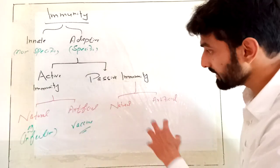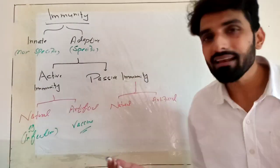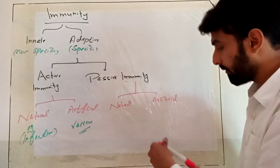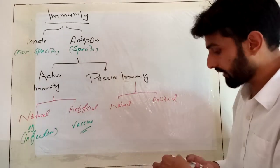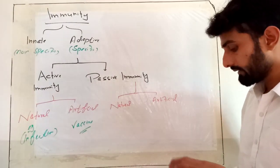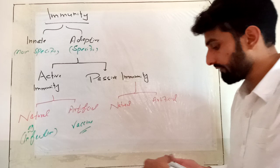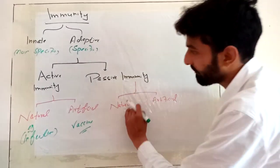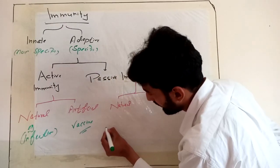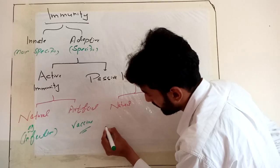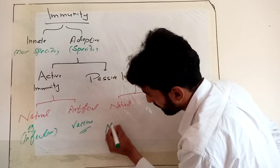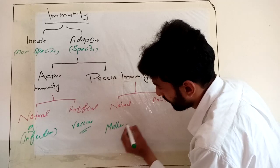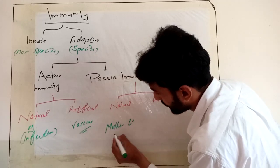This transfer of immunity from mother to fetus is a natural process — you cannot stop it. So the transfer of antibodies from mother to fetus is a type of natural passive immunity.